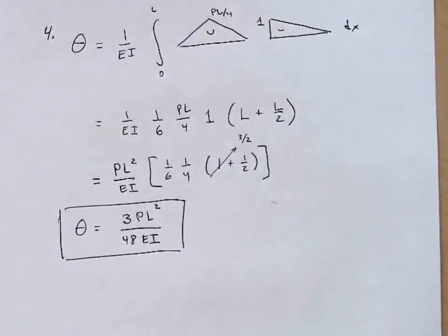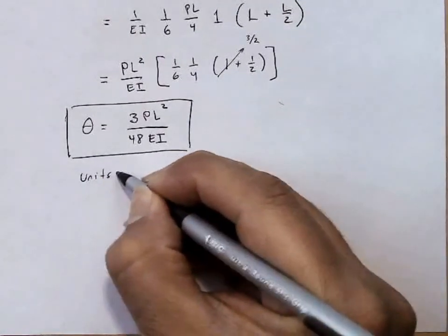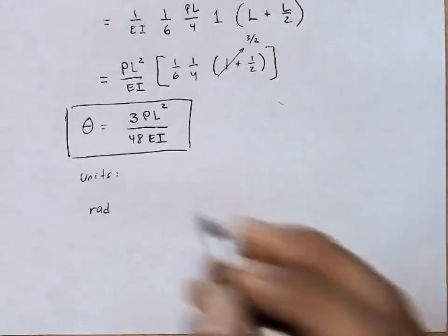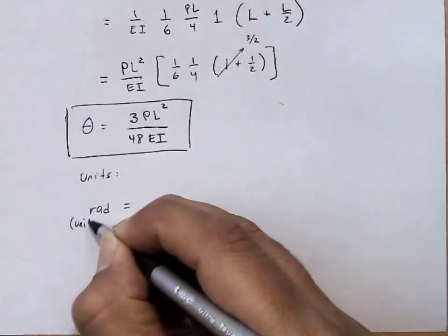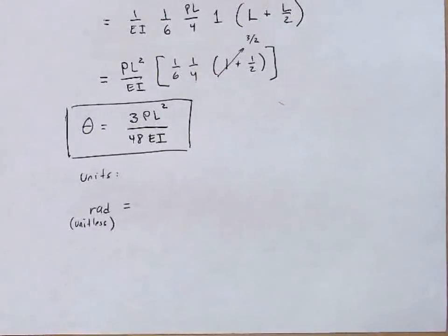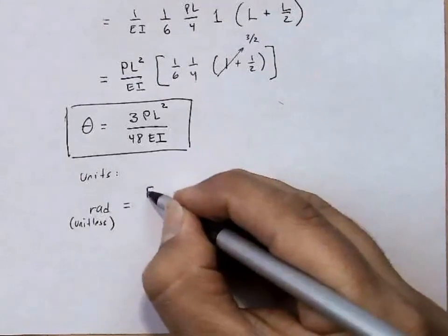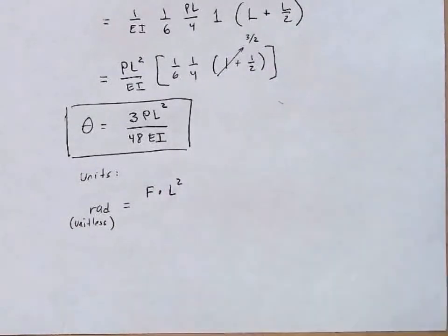And that's our answer. I always like to think about units, too. I like to check my answer with units. So let's think about the units here. Theta is in radians. Radians, as you'll recall, are unitless. So this whole expression should be unitless.